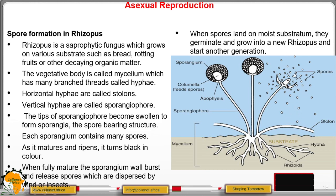When these spores land on moisture, they germinate and grow into new Rhizopus, beginning a new generation. Rhizopus has rhizoids whose function is absorption and anchoring the species onto the substrate — the place where they grow — similar to roots in plants.